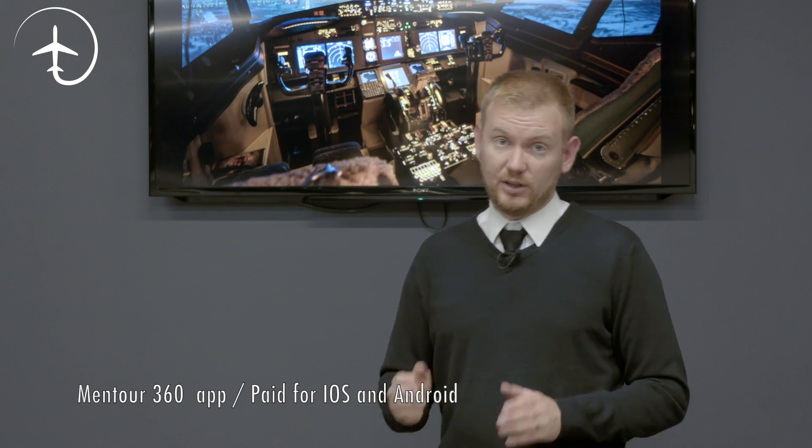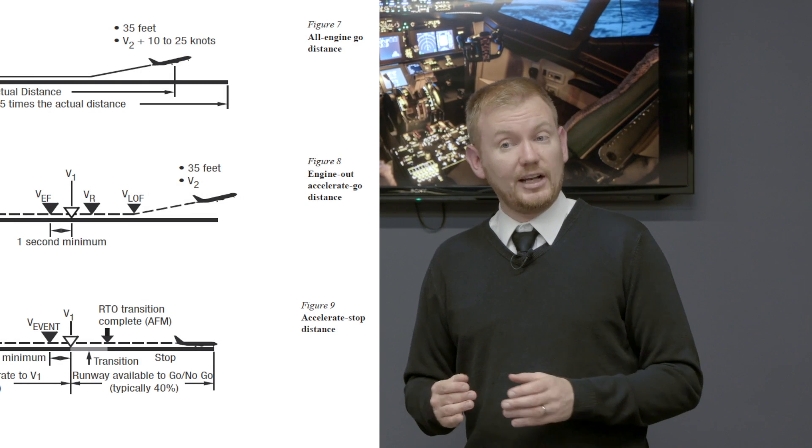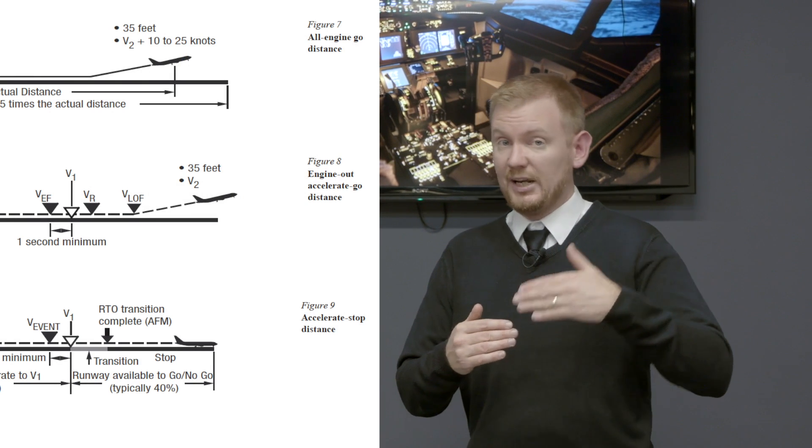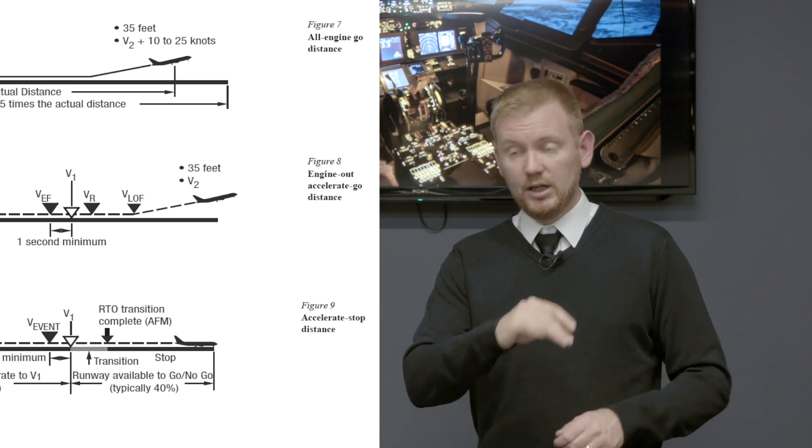When taking off, if any kind of engine failure happens prior to V1 — which is our decision speed — then we would reject the takeoff. If you want to see how a rejected takeoff is done, have a look at the Mementor 360 app where I demonstrated that. If the engine failure occurs after V1, then we are committed to the takeoff, because there's not enough runway left to stop safely. It's actually safer to get the aircraft in the air, sort everything out using checklists, and then land with the full runway length available.